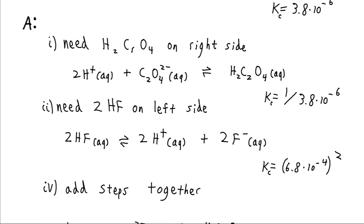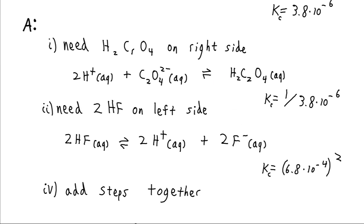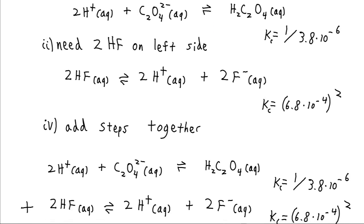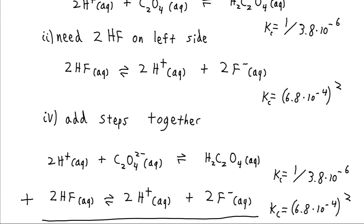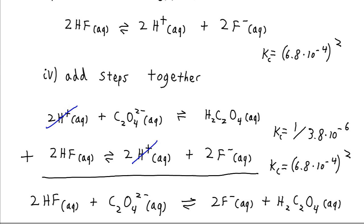And now we can add these two steps together since everything matches up. And if we do that, these H pluses are going to cancel out. Our overall equation that we are left with is going to be the one that we are after. 2 hydrofluoric acids plus the oxalate gives us 2 fluorides plus the oxalic acid.